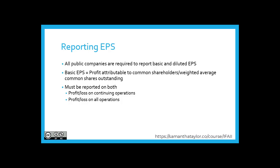Basic EPS equals the profit attributable to common shareholders divided by the weighted average common shares outstanding. This must be reported on both the profit and loss on continuing operations as well as the profit and loss on all operations, including discontinued operations.